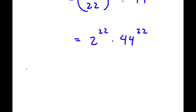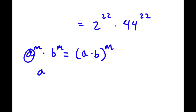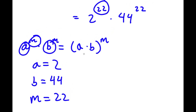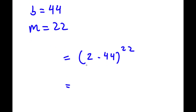If I have a to the power of m times b to the power of m, this equals a times b to the power of m. In this case, I have 2 to the power of 22 times 44 to the power of 22, where a is 2, b is 44, and m is 22. So this equals 2 times 44 to the power of 22. And 2 times 44 is simply 88, so my answer is 88 to the power of 22.